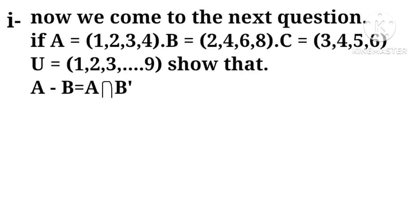Now we come to the next question. If A equals 1, 2, 3, 4, B equals 2, 4, 6, 8, C equals 3, 4, 5, 6, U equals 1, 2, 3 through 9, show that A minus B equals A intersection B complement.